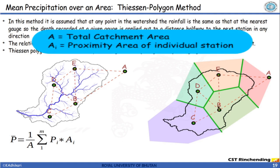To find the average precipitation over the entire catchment, multiply the precipitation at each station by its corresponding Thiessen polygon area, sum all these products, and divide by the total catchment area A. Alternatively, some authors use the weightage approach where the weight is ai divided by A, and that coefficient is multiplied with the station precipitation. Both approaches are equivalent and acceptable.